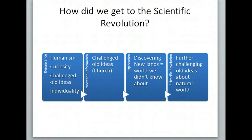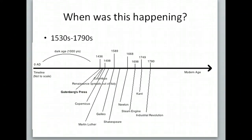So when exactly was this happening? It's happening in the 1530s to approximately the 1790s. It would be a good idea to draw this timeline out — it's not a perfect timeline, it's a chronological order of things. You can see how Gutenberg's printing press and the Renaissance are starting, and Columbus is happening around the same time as Copernicus.